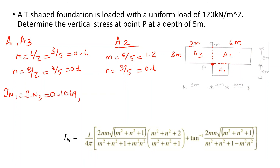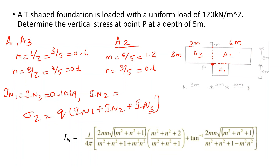Finally, the total vertical stress at point P is calculated as: σz = q × (iN1 + iN2 + iN3). This gives the final stress value. The problem is now complete.